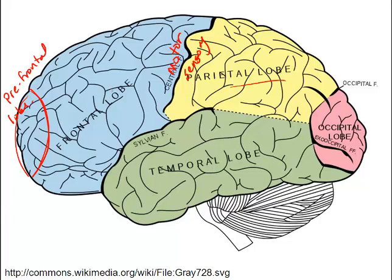The temporal lobes — there's one on each side — are where the primary auditory centers are located, which makes sense because the ears lie externally right in this area. The temporal lobe processes all information related to hearing, and also processes olfactory or smell, and some visual stimuli as well.